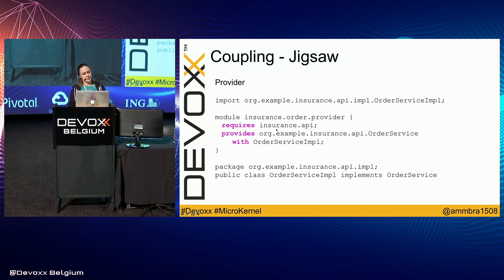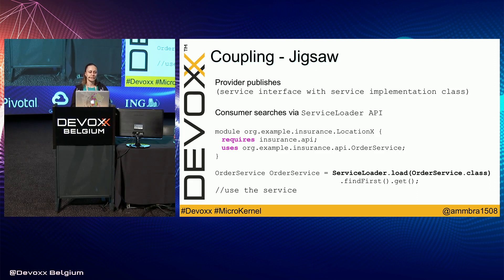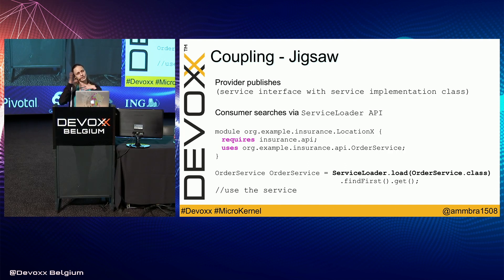In Jigsaw, the provider can use an interface defined in a different module and expose that implementation using the 'provides' keyword. You are providing the interface with the implementation to others. The consumer uses the same API and never looks into the provider's implementation module. The service loader API loads all services that implement a given service interface and lets you choose among multiple implementation modules. You can use annotations to pick which implementation you would like to use.